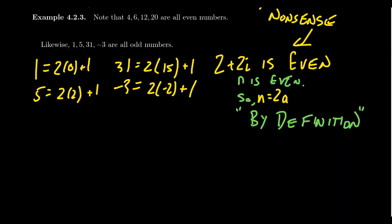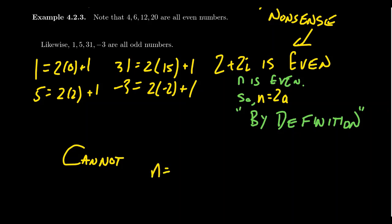So with the same even number n, even though n equals 2a, we cannot infer that n equals 3b for some integer b. The definition of an even number gives you that you're divisible by 2 — it doesn't give you anything else. It could be true, but you need more information than what's provided.